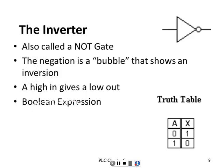The inverter, or NOT gate, has a negation — which is a bubble. That circle on the end means whatever comes into this gate comes out the opposite. We only have two conditions: true and false, one and zero, on or off. If I come in as a one, I come out as a zero. The bubble is known as an inversion — all I do is the opposite. A high in gives a low out; a low in gives a high out.